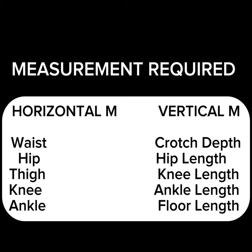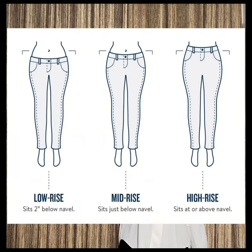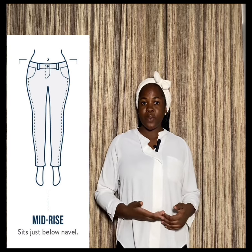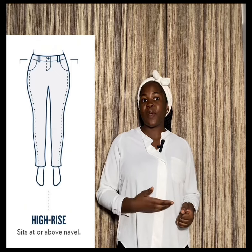To get started we first take the waist circumference, but we need to know the waistline of our pants. You need to know how pants are categorized based on their rise. The pant rise is the distance from the waist to the crotch seam. There are three types: the low rise, the mid rise, and the high rise. The low rise sits two inches below the navel, the mid rise sits just below the navel, and the high rise sits on or above the navel.